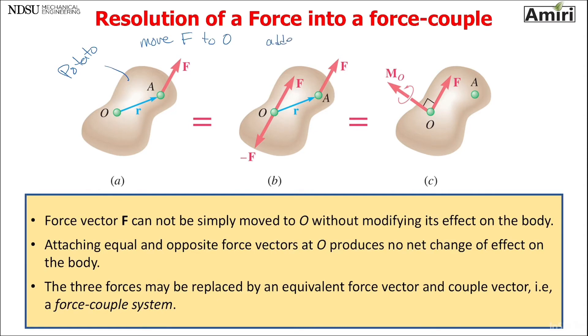So I've added plus F minus F. And I want you to look at these two. What do you see? Parallel forces separated by a distance, same magnitude, opposite direction. So I replaced that by a couple's moment, which is in vector format, and it's R cross F. Force vector F cannot be simply moved to O without modifying its effect on the body. Attaching equal and opposite force vectors at O produces no net change of effect on the body. The three forces may be replaced by an equivalent force vector and couple vector. In other words, a force couple system.